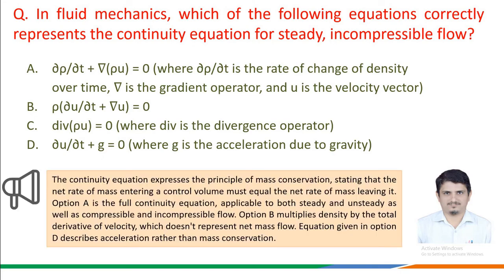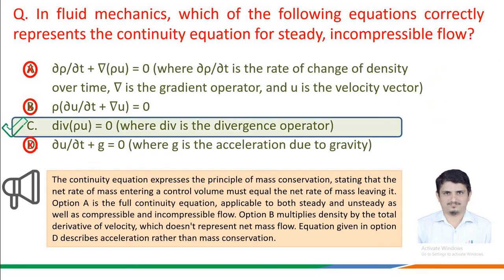What we must know: the continuity equation expresses the principle of mass conservation, stating that the net rate of mass entering a control volume must equal the net rate of mass leaving it. Option A is the full continuity equation applicable to both steady and unsteady, as well as compressible and incompressible flow. Option B multiplies density by the total derivative of velocity, which does not represent net mass flow. Option D describes acceleration rather than mass conservation. Therefore, the correct answer is option C: divergence of ρU equals zero, i.e., ∇·(ρU) = 0.